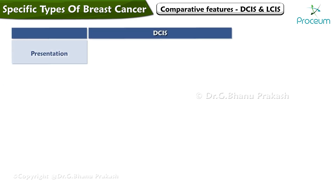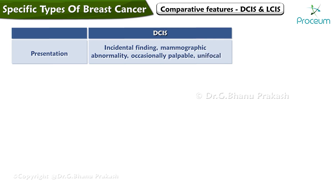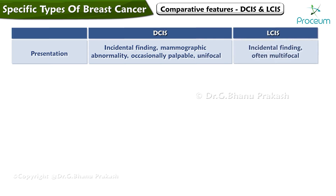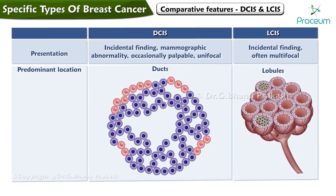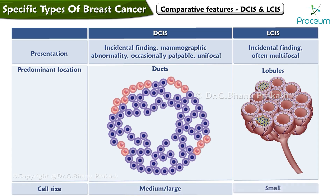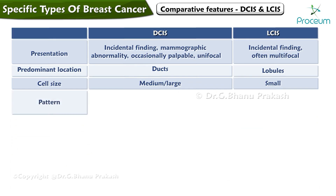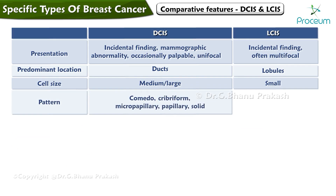Ductal carcinoma in situ tends to present as an incidental finding or mammographic abnormality and is occasionally palpable, tending to be unifocal, while lobular carcinoma in situ is an incidental finding that tends to be multifocal. Ductal carcinoma in situ develops within ducts, while lobular carcinoma in situ develops in lobules. Cell size in ductal carcinoma is medium to large, whereas in lobular carcinoma in situ it is small.